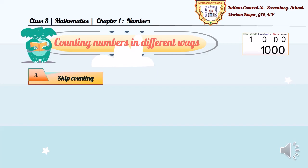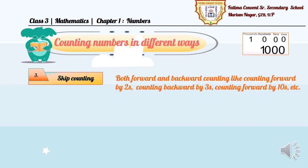Children, let me take your attention to the last type of counting, that is skip counting. Both forward and backward counting, like counting forward by 2s, counting backward by 3s, counting forward by 10s, etc. So, in this type of counting, we should know, we skip the given allotted numbers accordingly, forward or backward. For example, the question is asked for counting forward or backward related to the number specifically given.